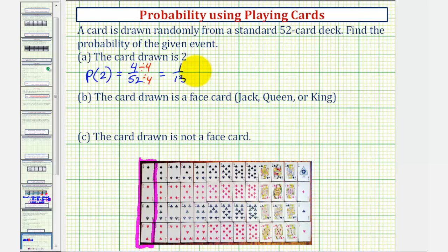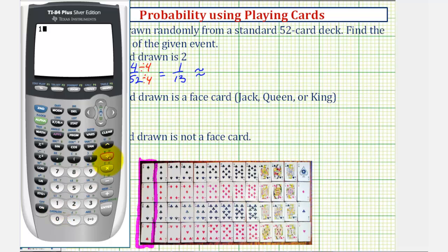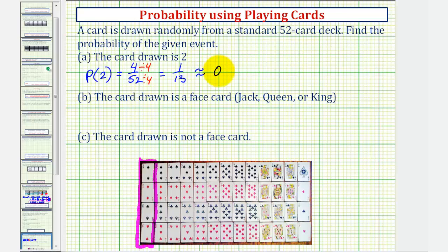Let's also convert to a decimal and a percent. To do this, we'll divide. 1 divided by 13 is equal to approximately 0.0769. Which as a percent would be 7.69%.